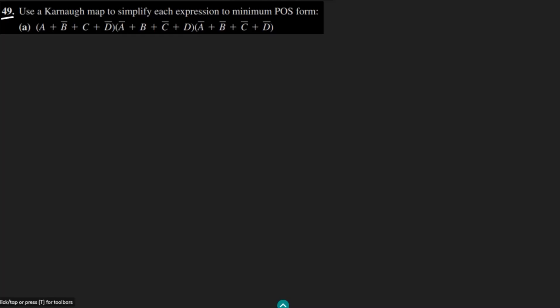Welcome back guys, this is question 49 and again we have to use the Karnaugh map to simplify each expression to minimum product of sum form. Previously we have seen the same question for three variables. Now we have four variables.